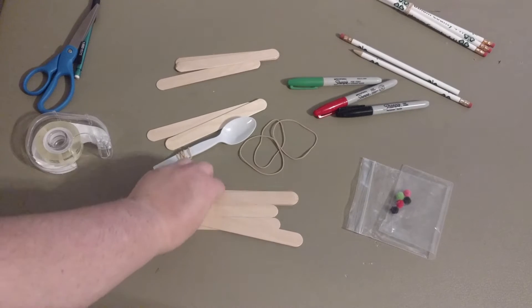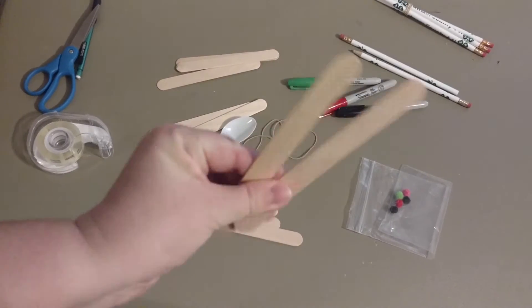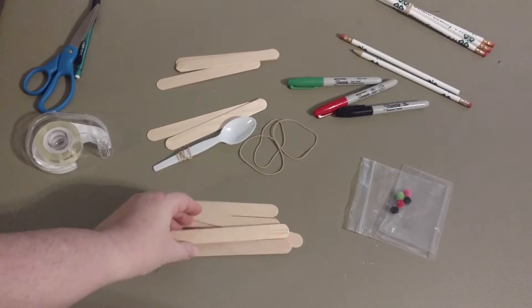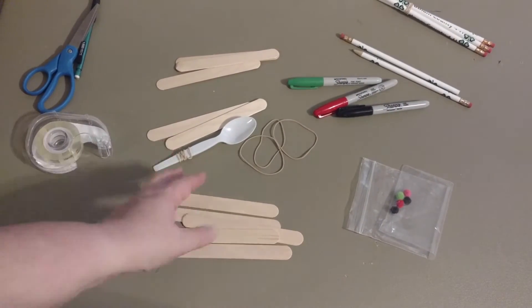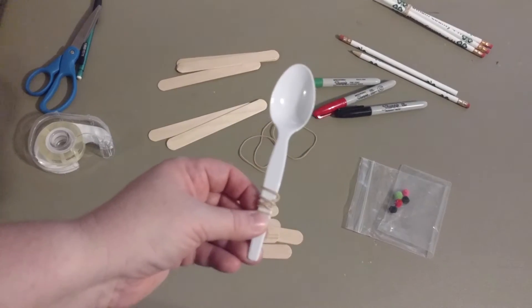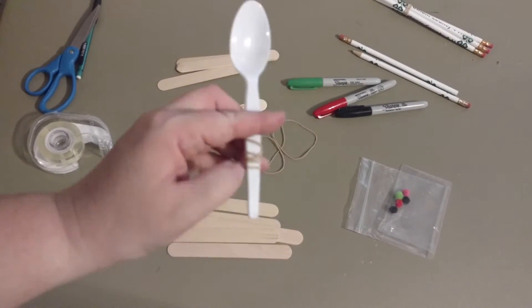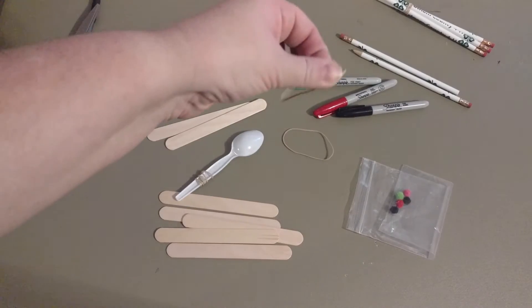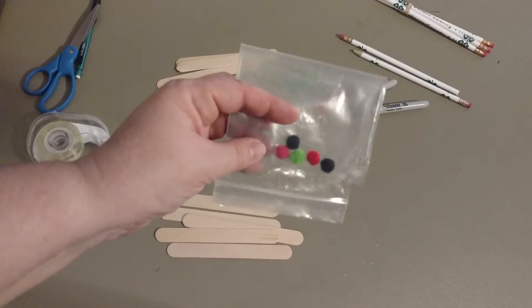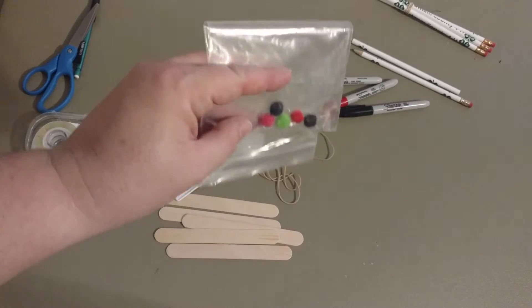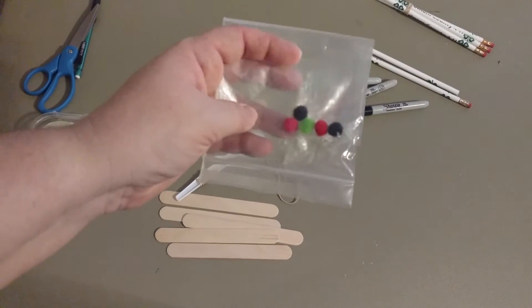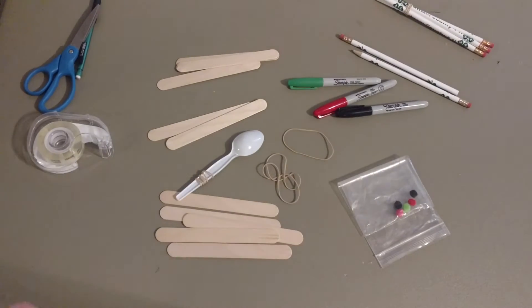Some items you're going to need are popsicle sticks. These are the larger kind, but you could use smaller ones. You're going to need about ten of those. You're going to need a plastic spoon and several rubber bands. You're also going to need something to launch. I don't have marshmallows today, but I have these cute little pom-poms that I'm going to use when I test out my catapult.